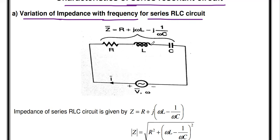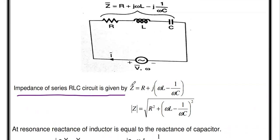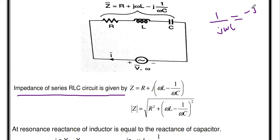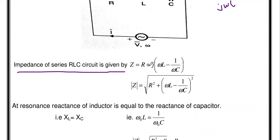Since R, L, and C are connected in series, the total impedance Z equals the sum of all three components: Z = R + jωL + 1/(jωC). Since 1/(jω) equals −j/ω, the reactance of the capacitor is written as −j/(ωC). Taking j outside, we can write Z = R + j(ωL − 1/(ωC)). This is the total impedance of the series RLC circuit.